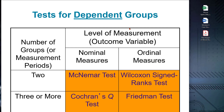This table lists the non-parametric tests for dependent groups based on the number of groups and the level of measurement. These tests allow us to compare related or paired observations within a group when the assumptions of parametric tests, such as paired t-tests, are not met. Dependent groups refer to situations where observations are not independent but are linked or connected in some way — these may arise from matched pairs, repeated measurements on the same subjects, or pre- and post-treatment comparisons.